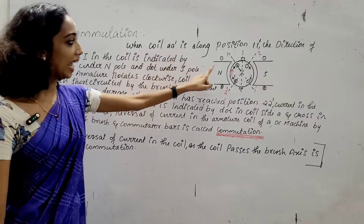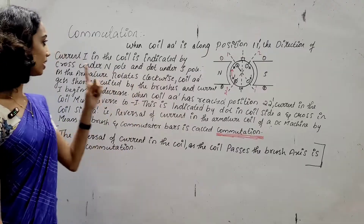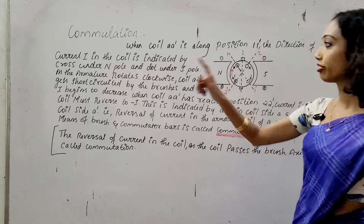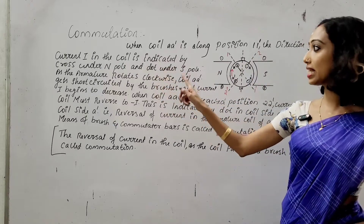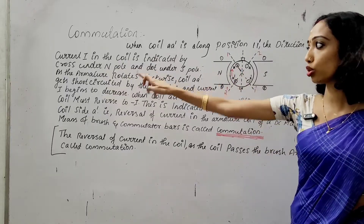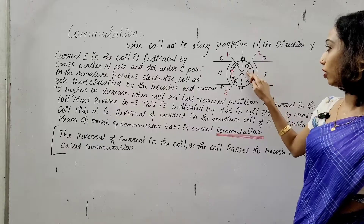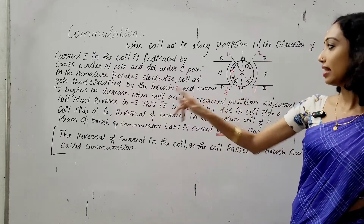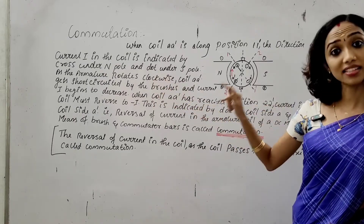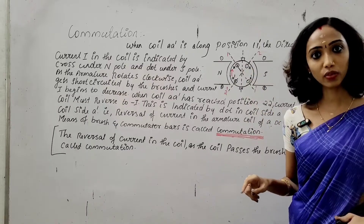When the coil AA' is along position 1-1', the direction of current I in the coil is indicated by cross under the north pole and dot under the south pole. As the armature rotates clockwise, coil AA' is short-circuited by the brush.